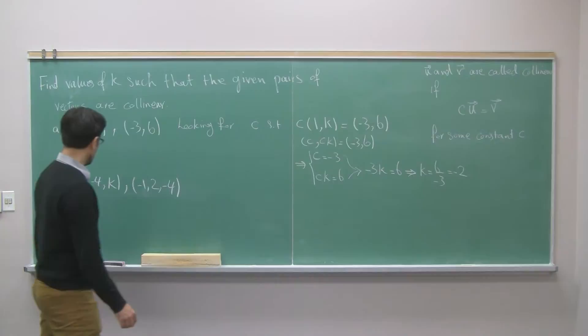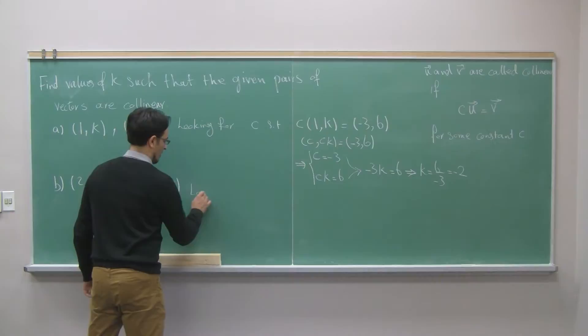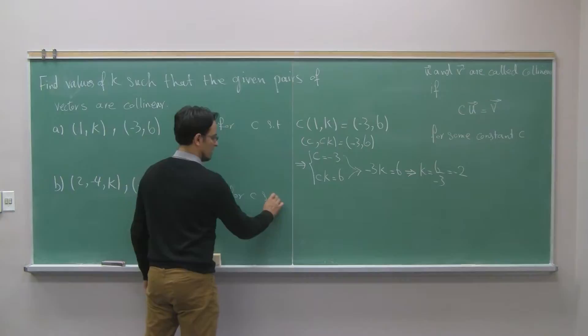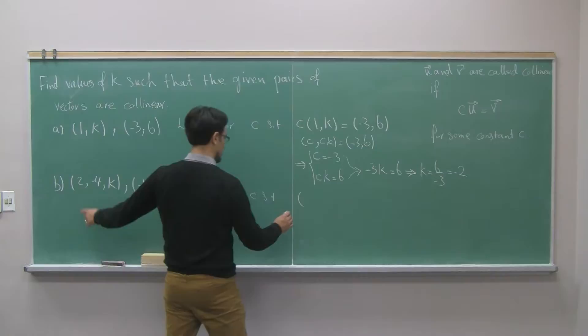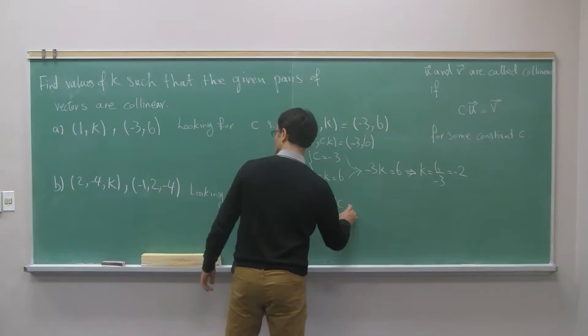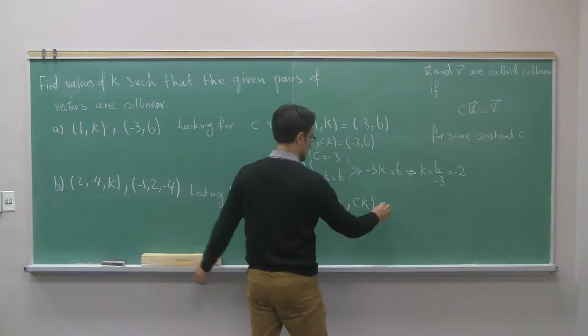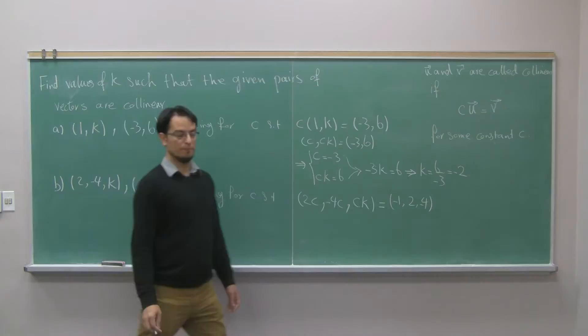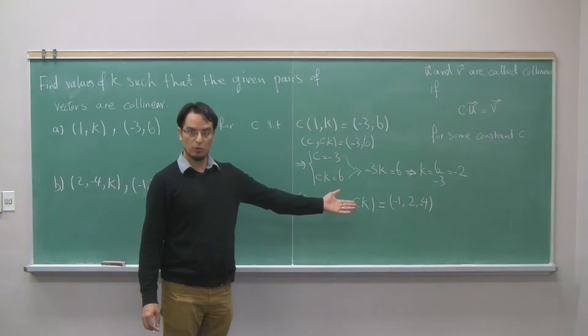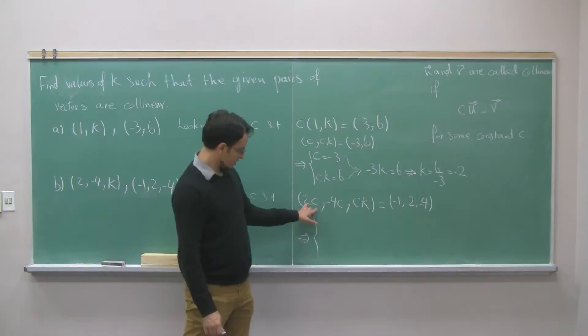Okay, let's apply the same theory here. I'm looking for c such that if I multiply c to the first component, let me multiply it. c times 2, 2c. Negative 4 times c is negative 4c. And c times k is ck. It should be equal to the second vector. Then, I have two vectors equal to each other. It means that their corresponding components should be equal.